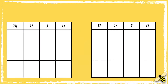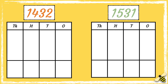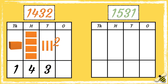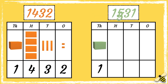We're going to use place value grids to help us compare numbers. Here are two numbers — which number is greater? The number 1432 has one thousand, it has four hundreds, it has three tens and it has two ones.